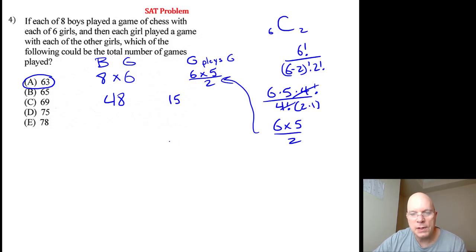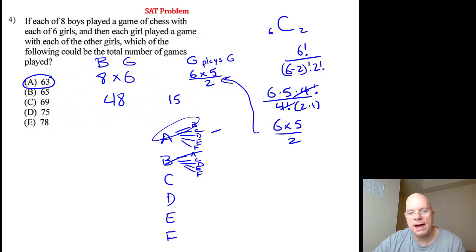Let's actually look at this tree diagram: A, B, C, D, E, F - that's six girls. Each girl is going to play a game with each of the other girls. So A plays B, C, D, E, and F. B plays A, C, D, E, and F, but B already played A right here, so you cross that one off. So you've got five matches here, four matches here.